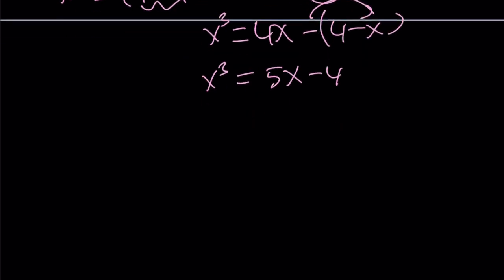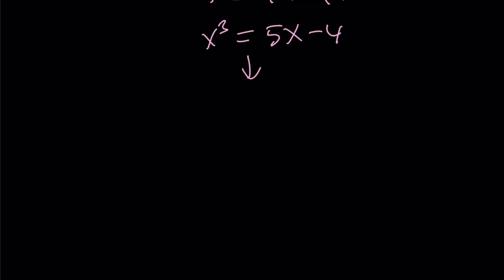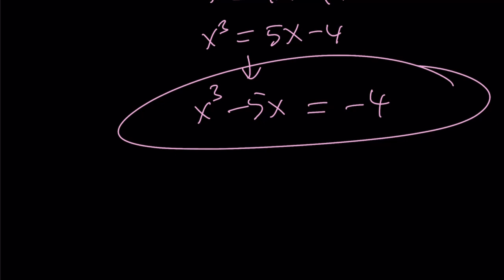What does that tell you? What am I looking for? x cubed minus 5x. Awesome. From here, if you subtract 5x from both sides, you get x cubed minus 5x equals negative 4. And that is the answer. Great.